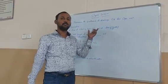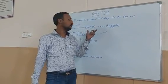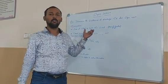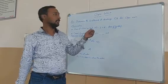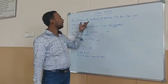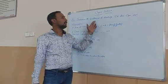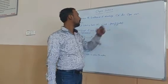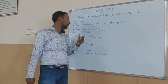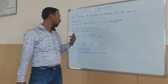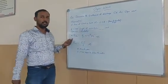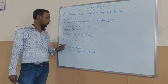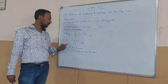Weirs are usually used to measure the discharge of water in open channels. Here, we are determining the coefficient of discharge of the ogee weirs.